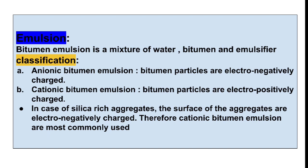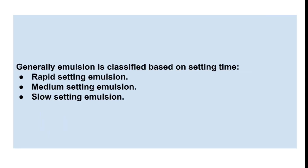In anionic bitumen emulsion, bitumen particles are electronegatively charged. In cationic bitumen emulsion, bitumen particles are electropositively charged. Since silica-rich aggregate surfaces are electronegatively charged, cationic bitumen emulsion is mostly used compared to anionic bitumen emulsion due to the silica charge.